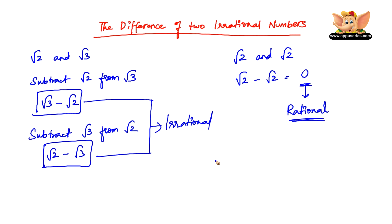So what we can conclude from this is the difference of two irrational numbers can be rational or irrational.